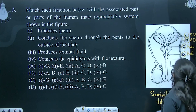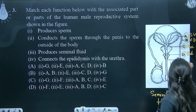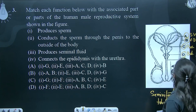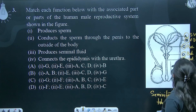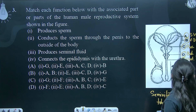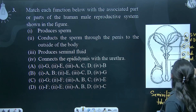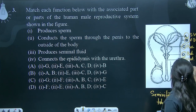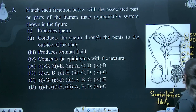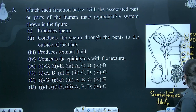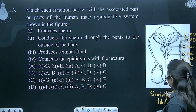Short mein likh lete hain. E part is urethra. And F jo hai, yahaan par epididymis wali region ko dikhaya gaya hai. Maybe it is labeled as vasa efferentia — it is not clear in the diagram.